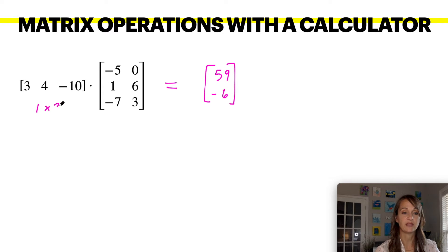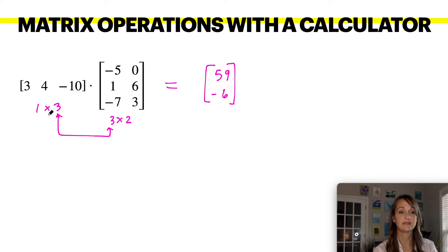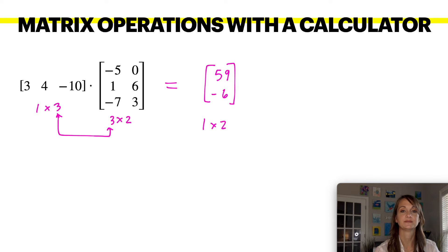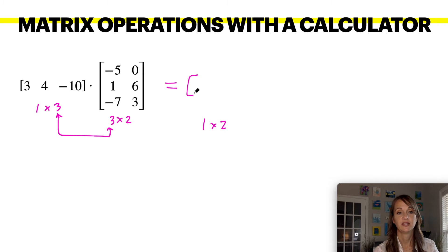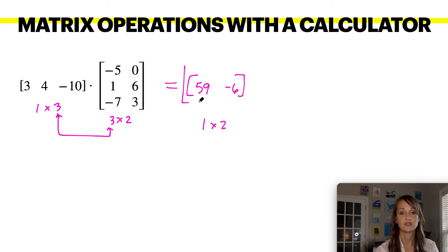This is a one by three and this is a three by two, so since the threes line up, the resulting matrix is going to be a one by two. The answer is 59 and negative six — one row with two columns, so it did work.